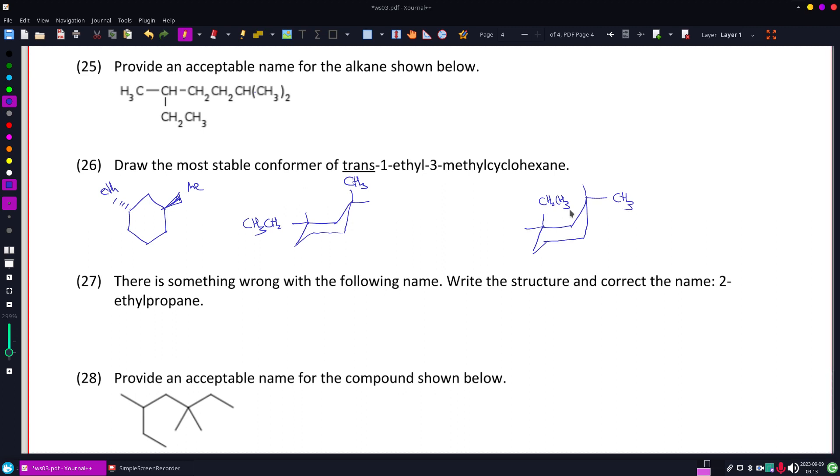All right, so on our two conformers, we're always going to have one axial and one equatorial. But since ethyl is the bigger group, it's going to want to stay equatorial more, meaning the most stable is this one.